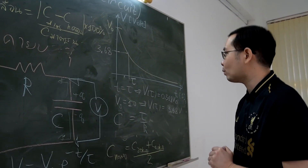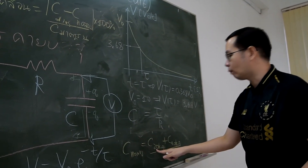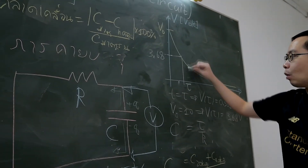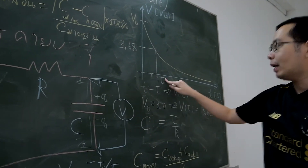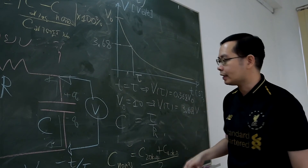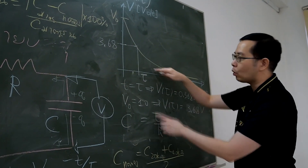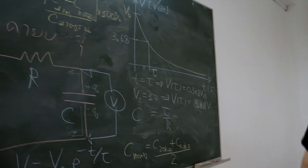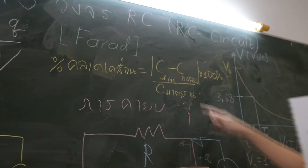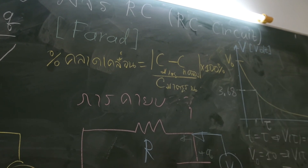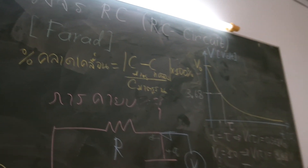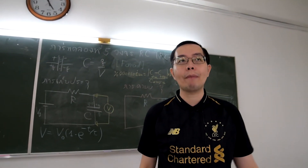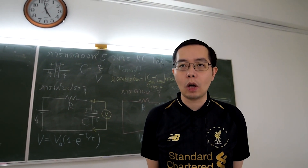You should plot four graphs in total for this experiment: two graphs for charging and two graphs for discharging. Calculate the experimental value of C as the average of C with R equal to 20 kilohms and C with R equal to 40 kilohms. Calculate the percentage of error using the formula written on the blackboard. That is all for Experiment 5. Thank you.